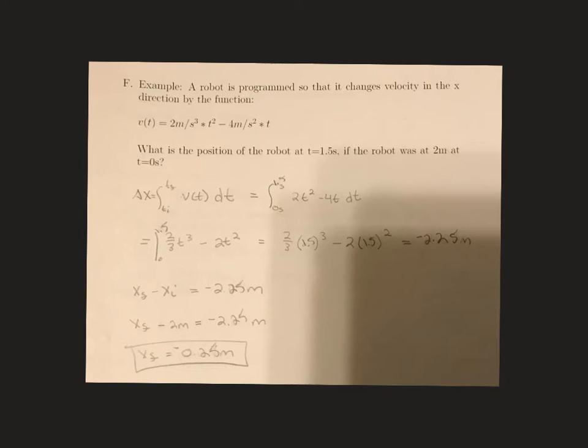So that gives us a negative 2.25 meters. And remember, this is the change of position. So we know that the robot went backwards in the x direction, 2.25 meters.